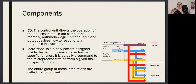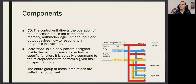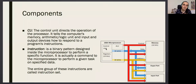The third component is the control unit, or CU. In computer science there are many abbreviations: CU for control unit, ALU for arithmetic logic unit, GPU for graphical processing unit. These abbreviations are used everywhere, and I will use them too — if you don't understand any of them, please ask.